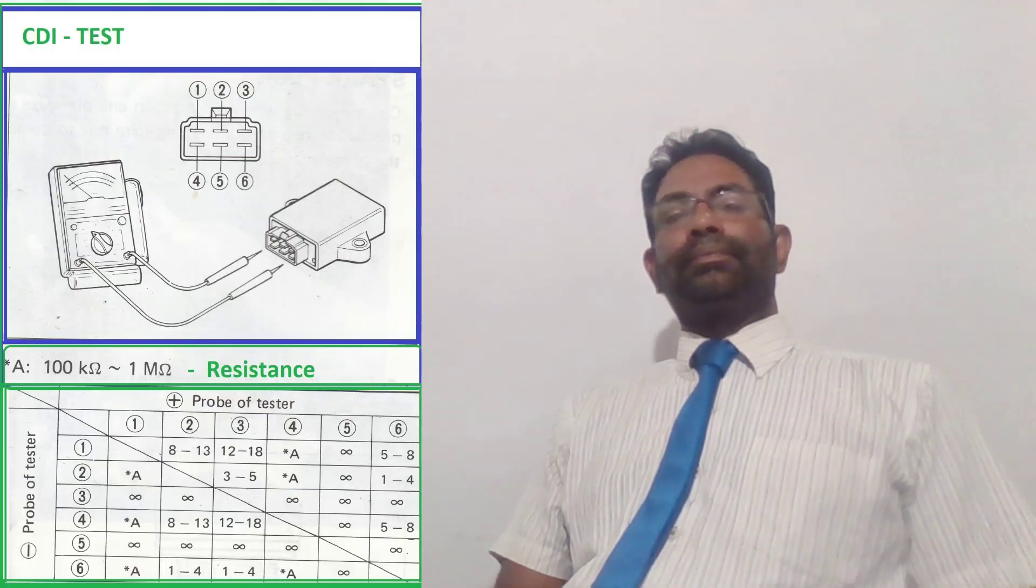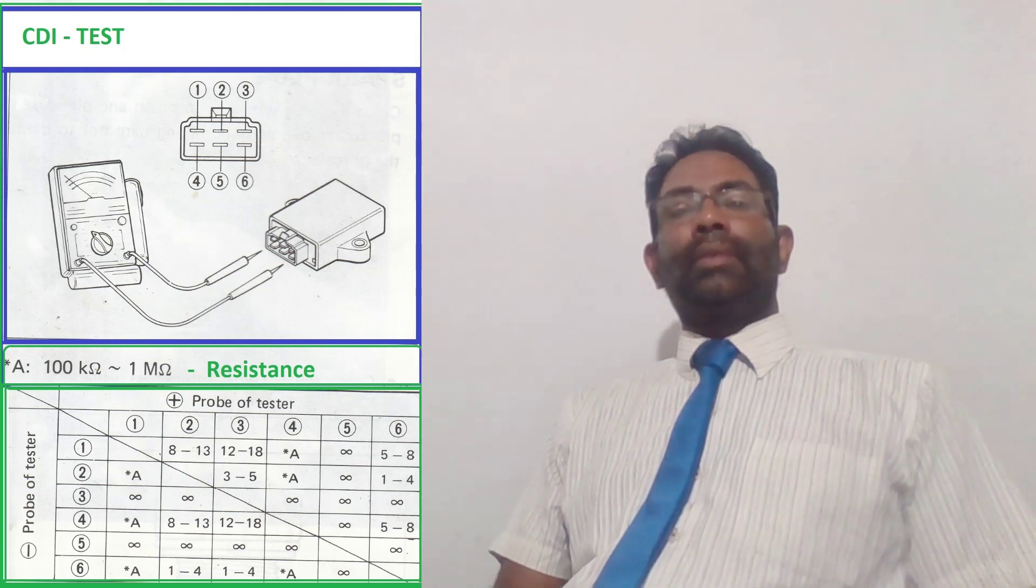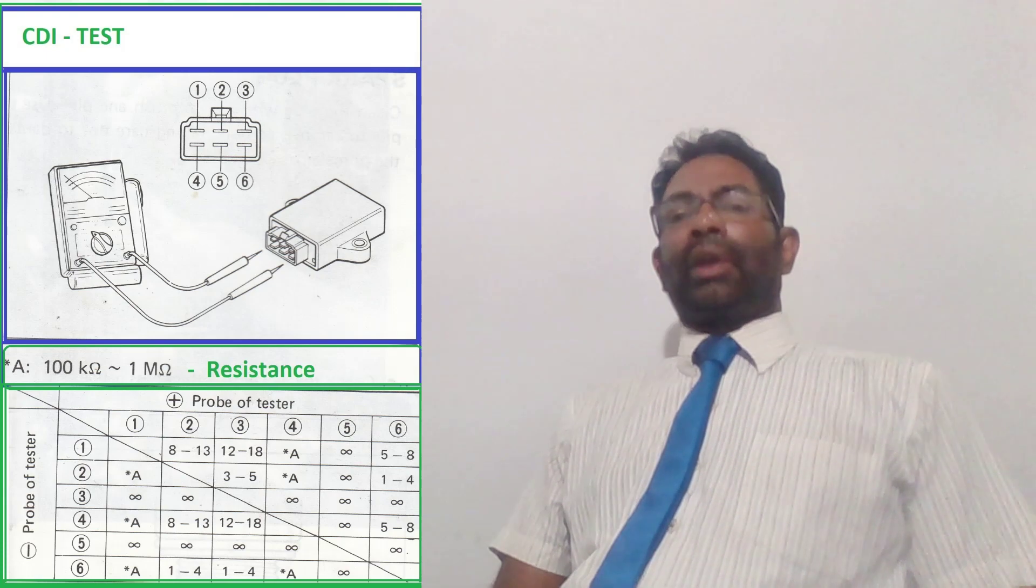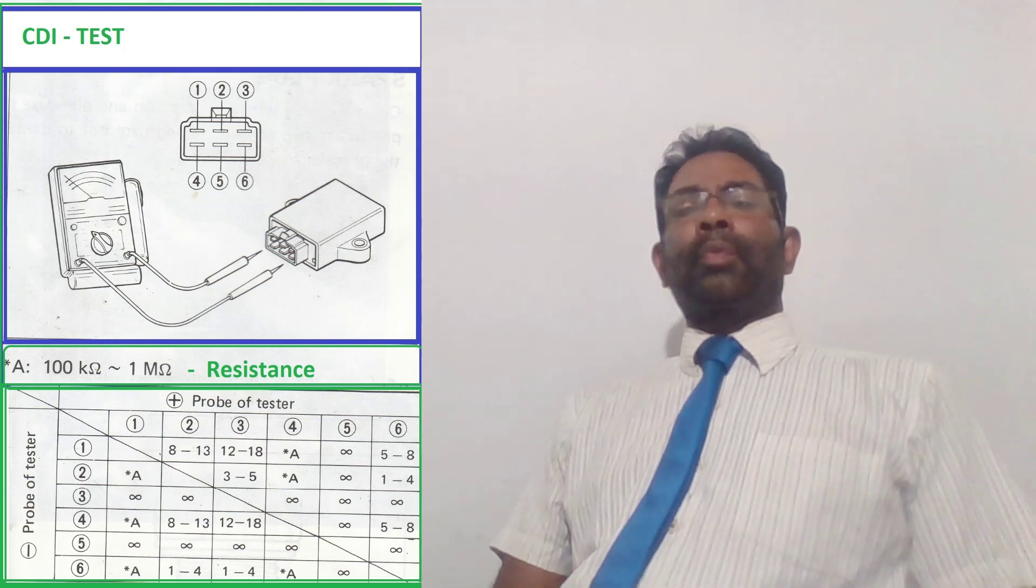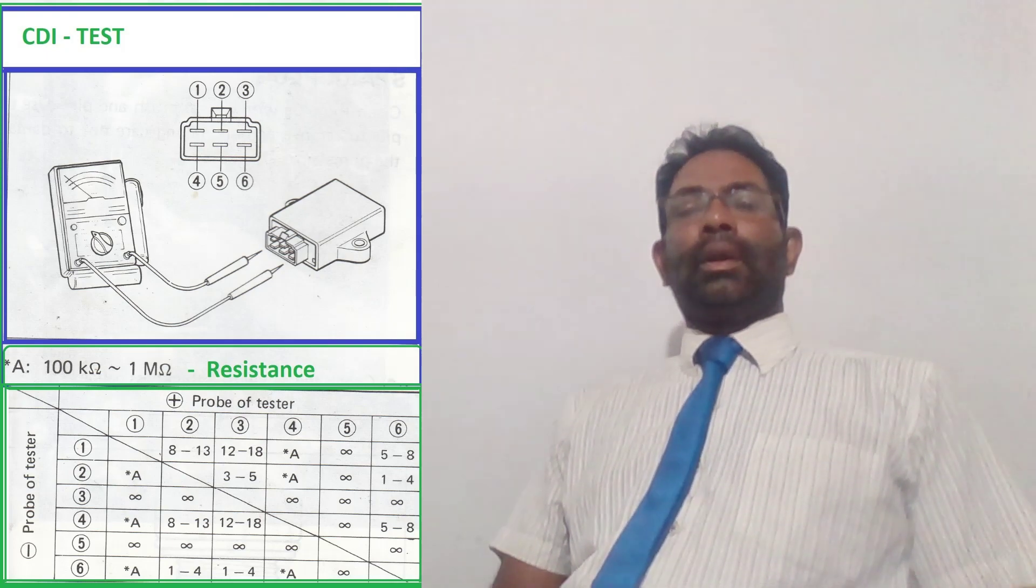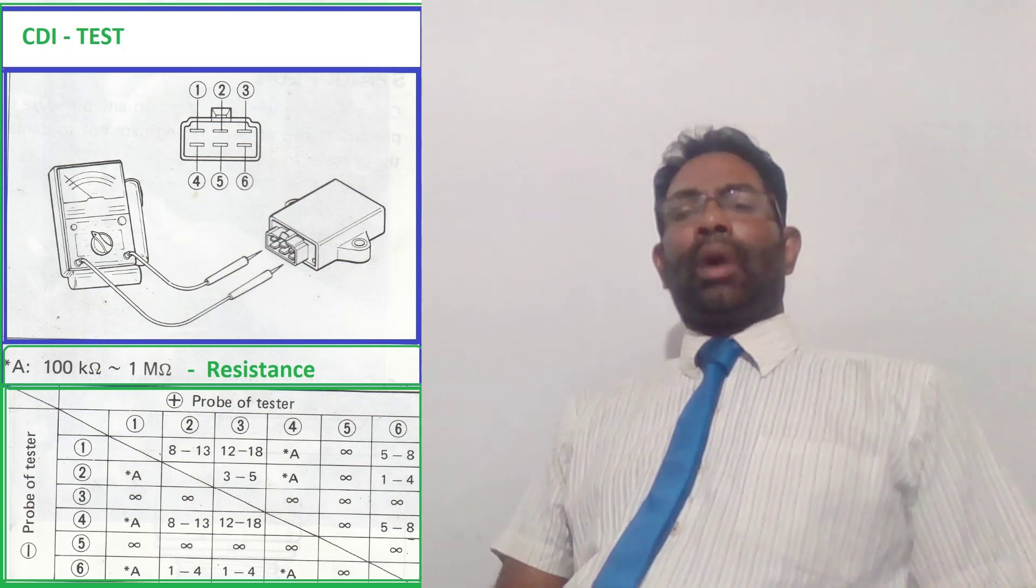Ignitor unit or CDI. You can use a pocket tester, apply it to each wire with the CDI unit and measure range of ohms. Manufacturer recommended standard range is 100 ohms to 1 mega ohm. You can see this picture for easy understanding.